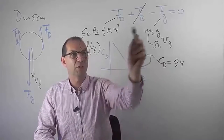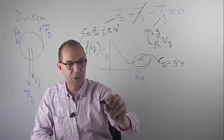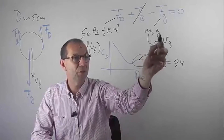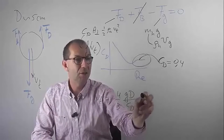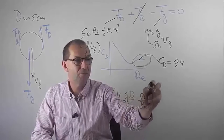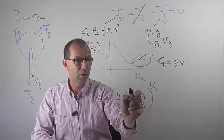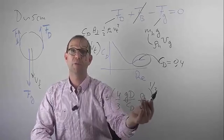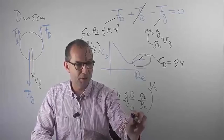Once I have the drag coefficient, I can now explicitly solve for the terminal velocity. The terminal velocity reads as the square root of 4/3 times G times d, stemming from the cube of d in the gravity term and the square of d in the drag term, divided by CD times the density of the hailstone over the density of air. In this expression, we know d, we have estimated CD at 0.4, and we know both densities. Compute it yourself and you will find that the terminal velocity is on the order of 35 meters per second.